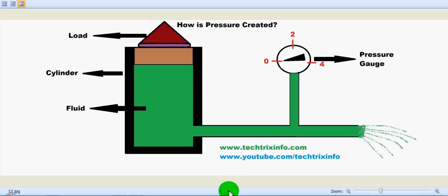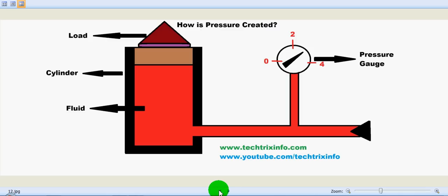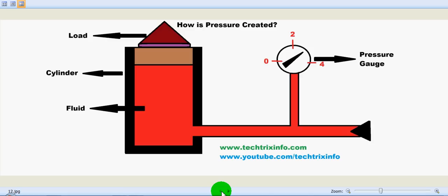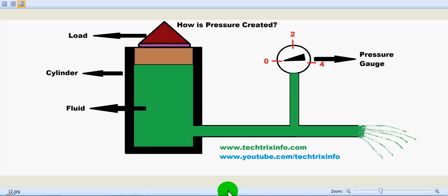So there is no restriction here, the pressure is zero. Now we have restriction over here, and the pressure is three. See the pressure gauge changing. When there is a restriction, we have pressure, and when there is no restriction, we don't have pressure. So it clearly explains that when there is a restriction towards a load, we have pressure.